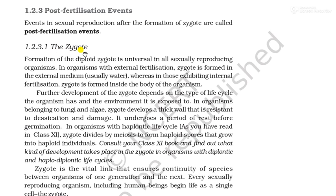The formation of zygote is universal in all sexually reproducing organisms — zygote happens in all of them, with 2N number of chromosomes. In organisms with external fertilization, the zygote is formed in the external medium, usually water.